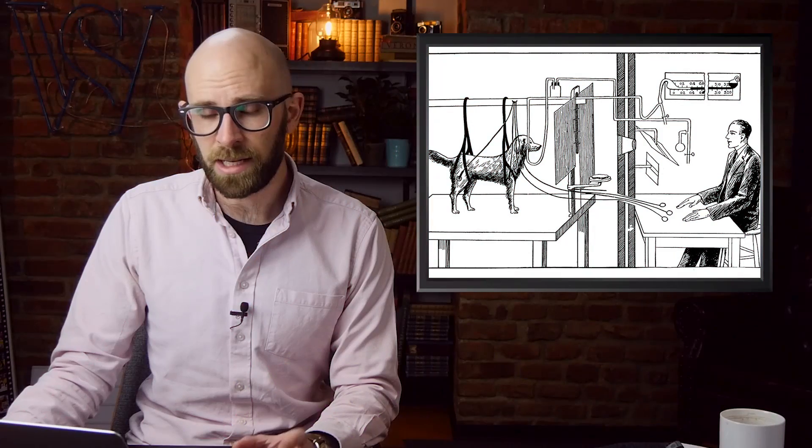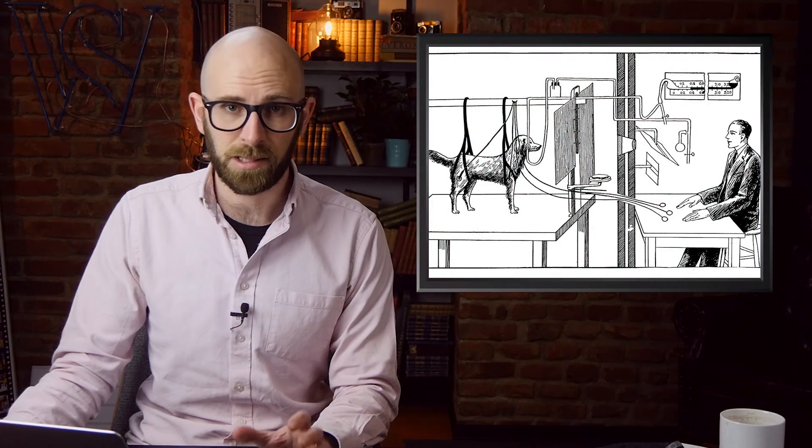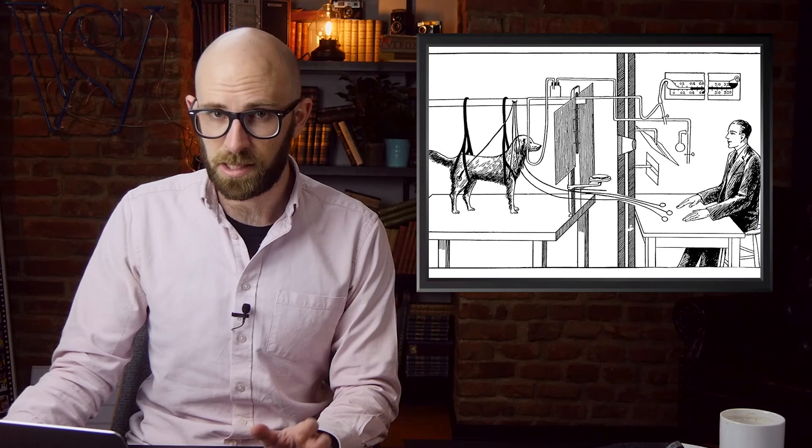He would do something called sham feeding, where he would make a hole in the dog's throat called a fistula, so that the food would drop out and never reach the dog's stomach. By continuing to make lower holes on various dogs, he was able to measure excretions at various levels, and his comprehensive picture of the digestive system won him a Nobel Prize in 1904 for physiology and medicine. While he did do some later psychological research with dogs, a bell was almost never one of the sounds that he used to trigger the dog's association with food.